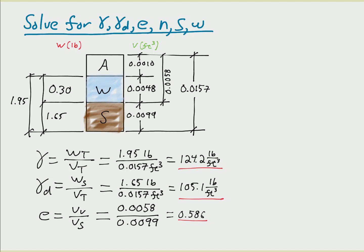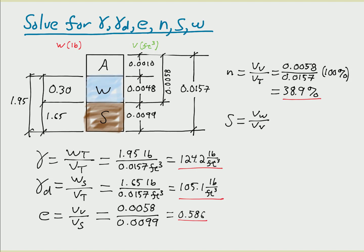By convention, the void ratio is presented in decimal form rather than as a percentage. The porosity is similar to the void ratio but is based on the total volume: 0.0058 divided by 0.0157 times 100%, giving 38.9%. The porosity is most commonly presented as a percentage to keep it from being confused with the void ratio. The degree of saturation is the volume of water divided by the volume of voids: 0.0048 divided by 0.0058 times 100%, giving 82.8%.